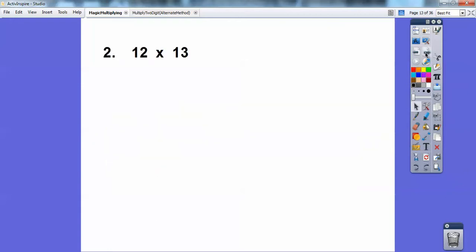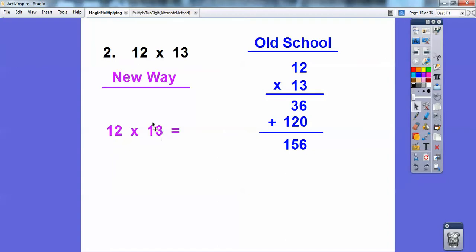Let's try another one. 12 × 13. Here's the old way. If I did that, I get 156. The new way is, I'm going to add this 3 + 12. 3 + 12 is 15. There's my 15 right there. Then you multiply 2 × 3 is 6. There it is, 156. That's incredible. That goes so much faster. You can almost do that in your head.